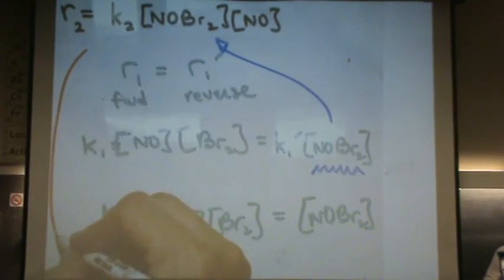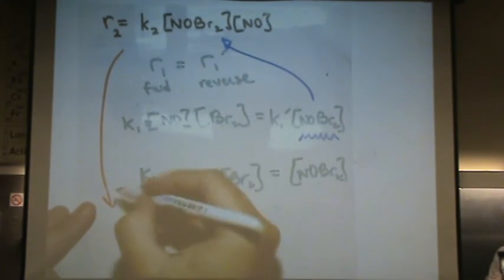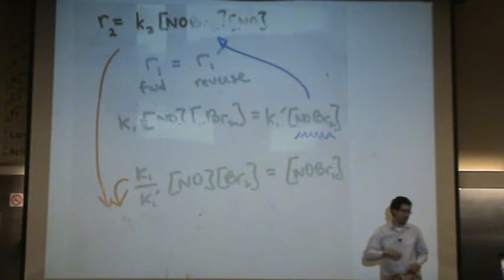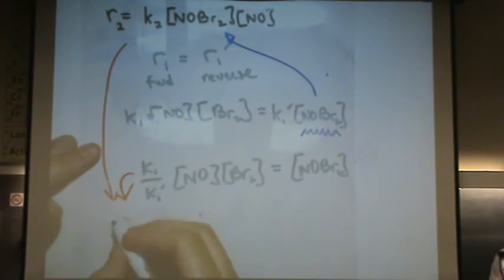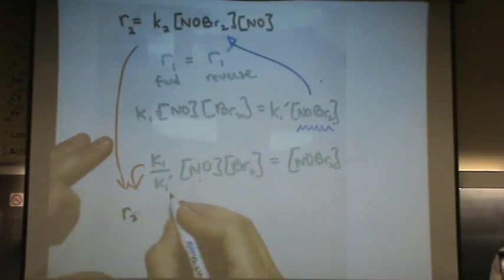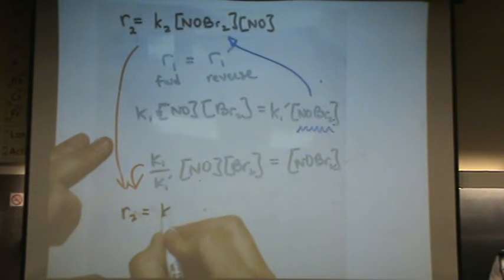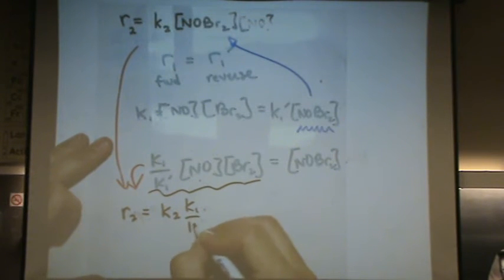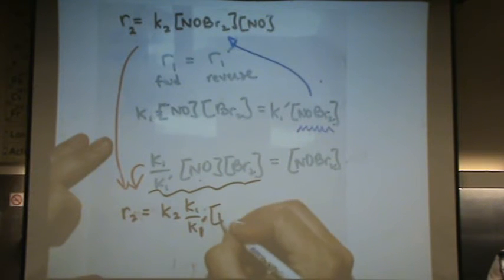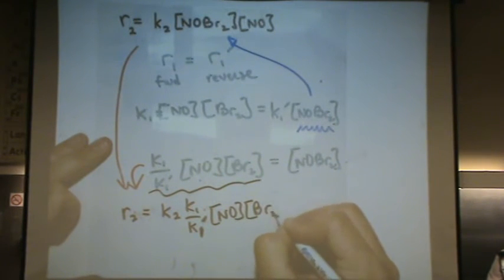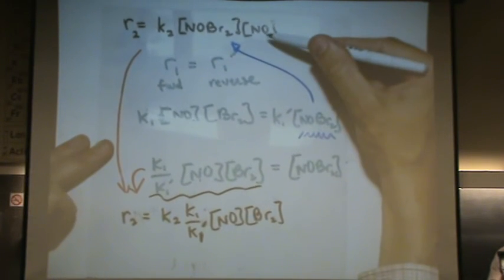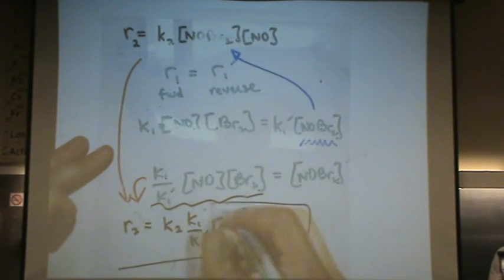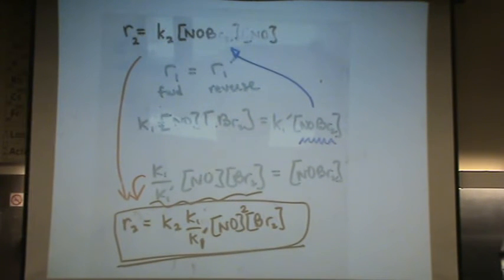Now I'm going to combine this equation and this equation. Basically plug in NOBr2 to the top equation in black. Rate 2, which is my rate of reaction, the slow step, is equal to K2 times NOBr2, which is K1 over K1 prime times NO times Br2, and then finally times another NO. See this second NO right here? Square. Now I have a rate law that does not have an intermediate in it, and I have my answer.